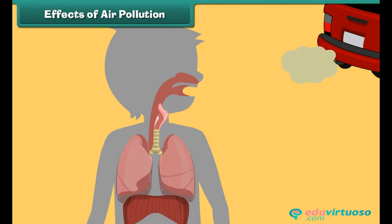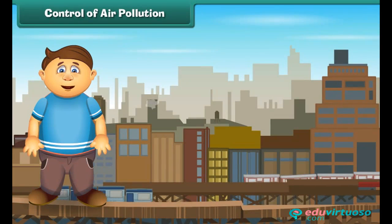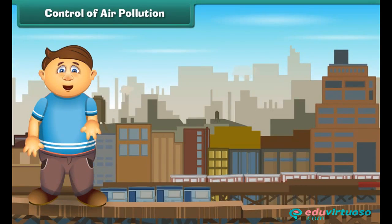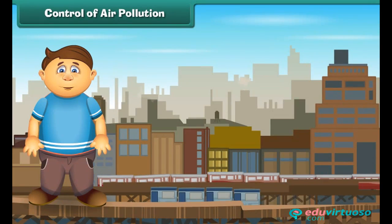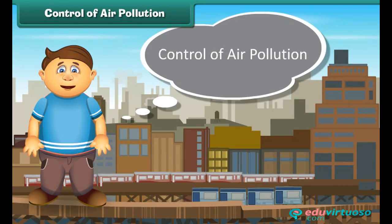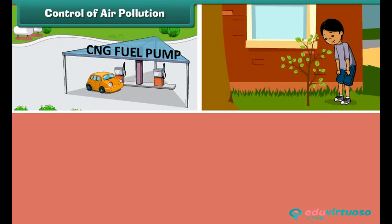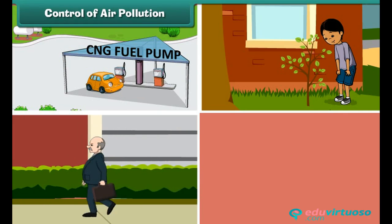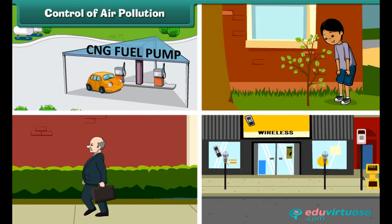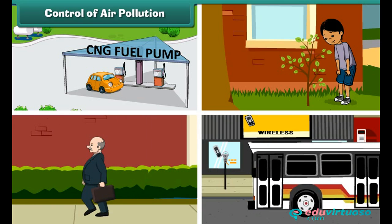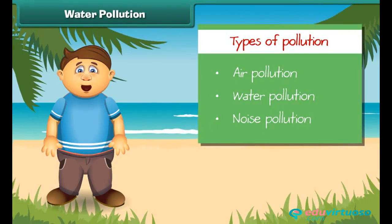Air pollution adversely affects our lungs and we suffer from respiratory disorders. To control air pollution, we can use clean fuels like CNG in vehicles and industries, plant new young plants, prefer walking over driving, and use public transport for transportation.